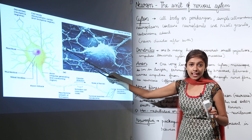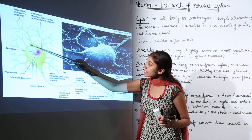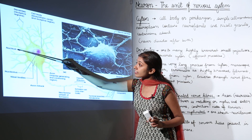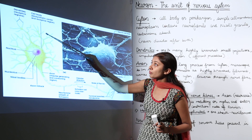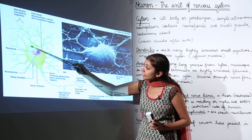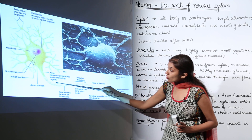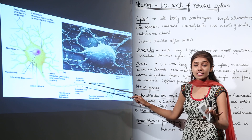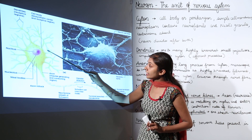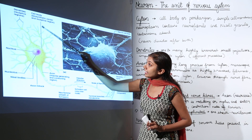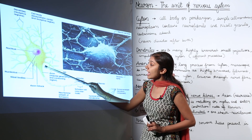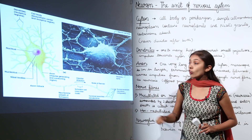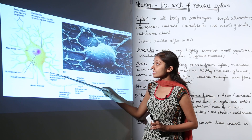Looking at the diagram, the cell body is the cytone. The dendrites bring impulses to the cytone, and the axon originates from the cytone. So the three main parts are: the cell body (cytone), the dendrites (projections), and the axon — the long process arising from the cell body.